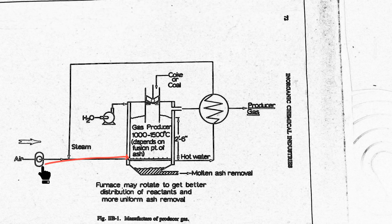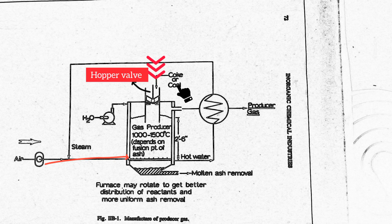First, air reaches the bottom section of the furnace through an air pump and coke or coal is fed into the furnace through the hopper valve located in the top section.